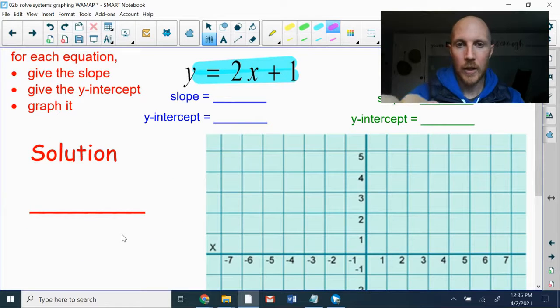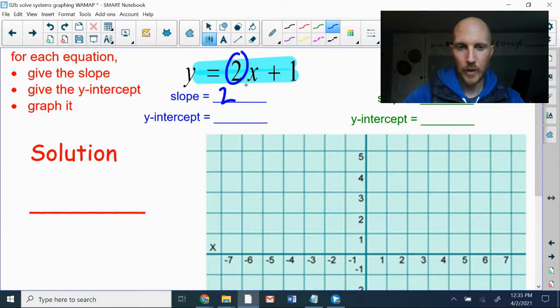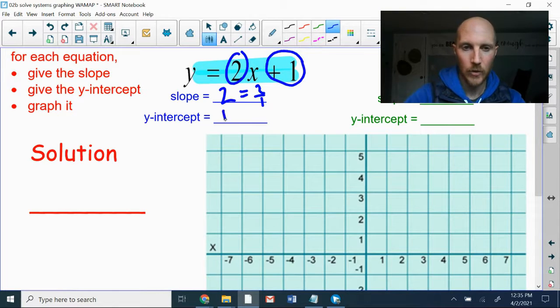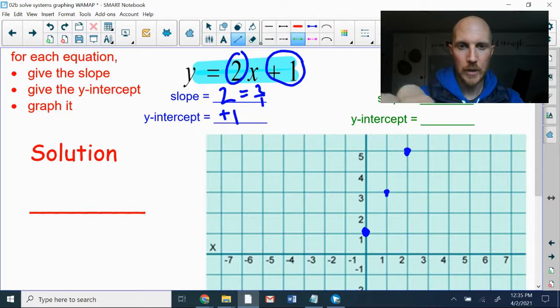Second example. Again, a blue and a green equation. Let's do that blue one first. This is actually the same equation we just saw. So the slope right there, multiplied onto the X, that's two. If I write it as a fraction, that's two over one. The Y intercept at the end is what's being added or subtracted. So that's plus one. So my graph, I start at one on the Y axis. Up two over one, up two over one. Draw that line.